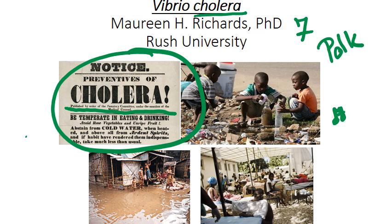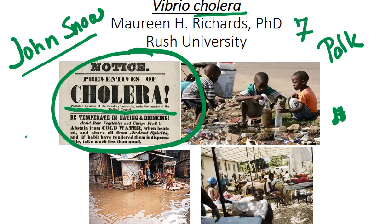Cholera wasn't identified as the causative organism until 1854, over 20 years later, when John Snow — for all you Game of Thrones fans, this one was actually a microbiologist, not a member of the Night's Watch — showed that it actually came from contaminated drinking water.